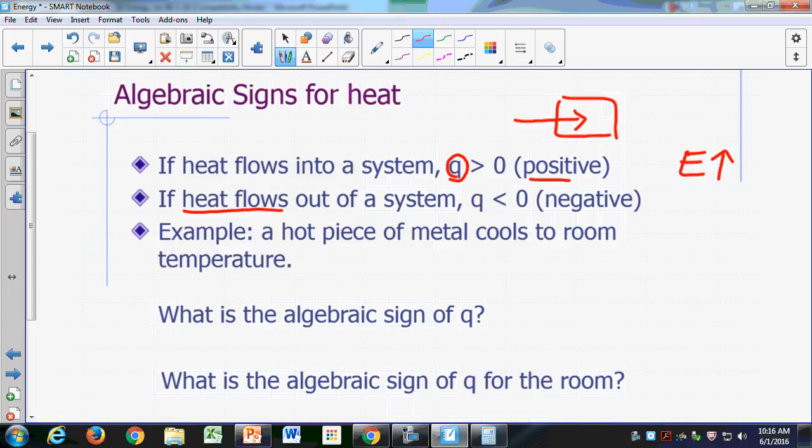And when heat flows out of the system, so if it comes out of your system, then the energy would be dropping, right? The system loses energy, then we're going to assign a negative value for Q.